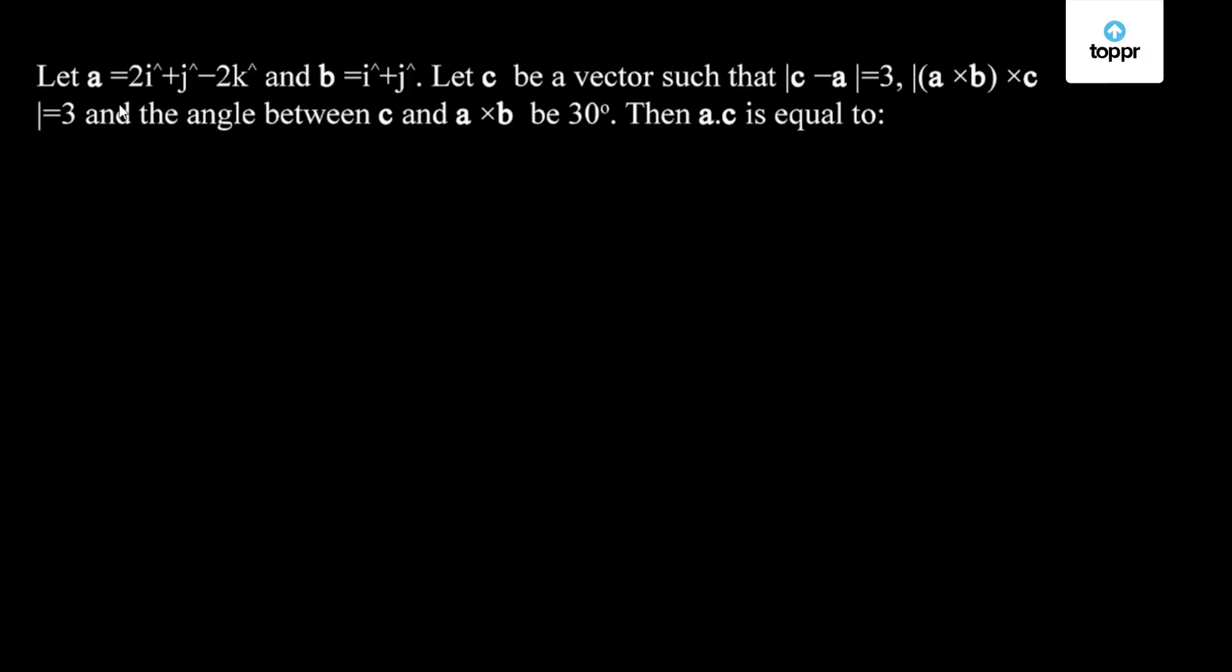Hi guys, in this question, this is a vector question. The vectors given are a equal to 2i cap plus j cap minus 2k cap and b equal to i cap plus j cap. And note that these bold letters are the vector notations. Let c be a vector such that mod of c minus a equal to 3 and mod of a cross b cross c is also equal to 3. And the angle between vector c and vector a cross b be 30 degrees.